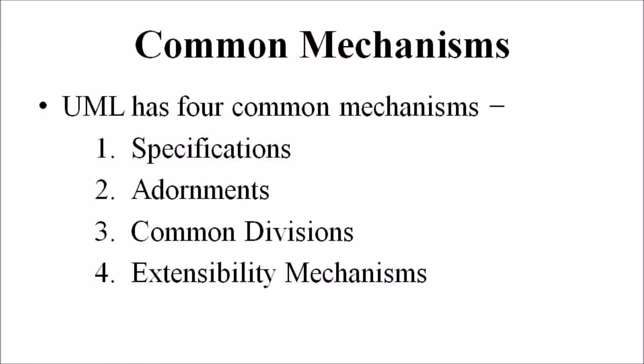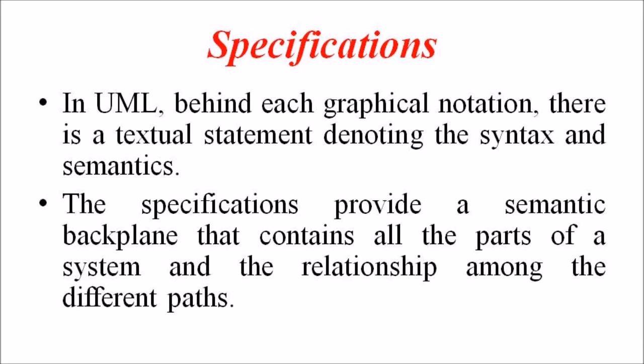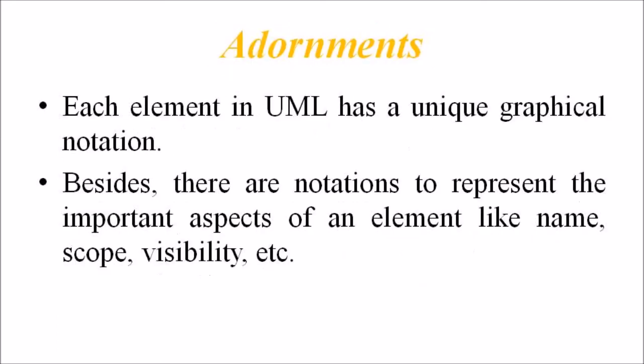The third point is the common mechanisms. UML has four common mechanisms: specifications, adornments, common divisions and extensibility mechanisms. In UML, behind each graphical notation there is a textual statement denoting the syntax and semantics — these are the specifications. Specifications provide a semantic backplane containing all parts of the system and the relationships among them. The second mechanism is adornments: each element in UML has a unique graphical notation, and there are additional notations to represent important aspects like name, scope, visibility, etc.